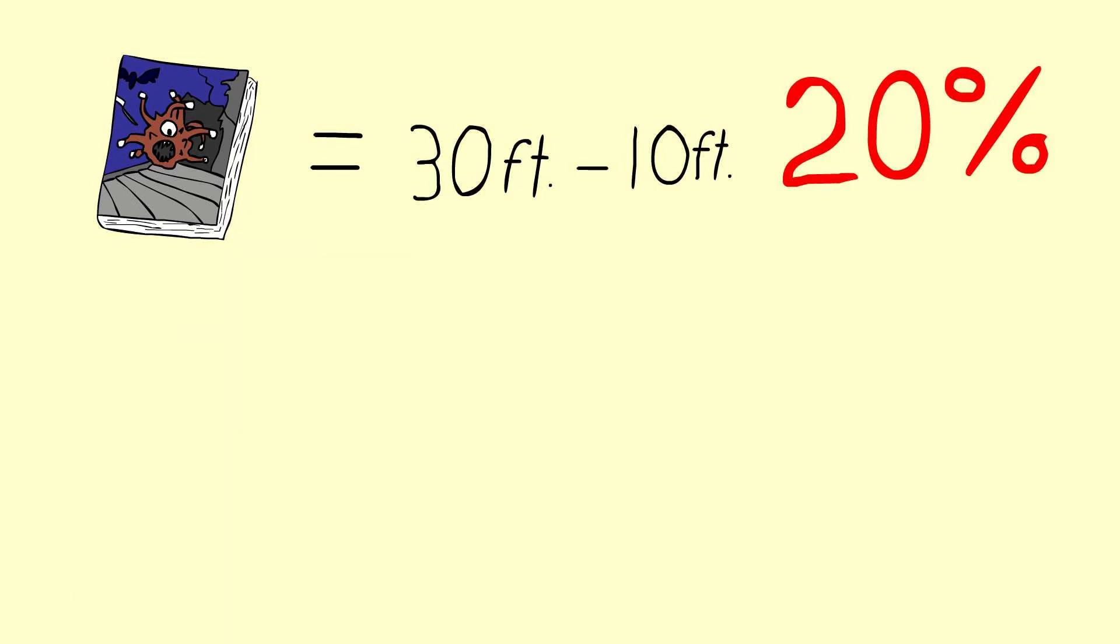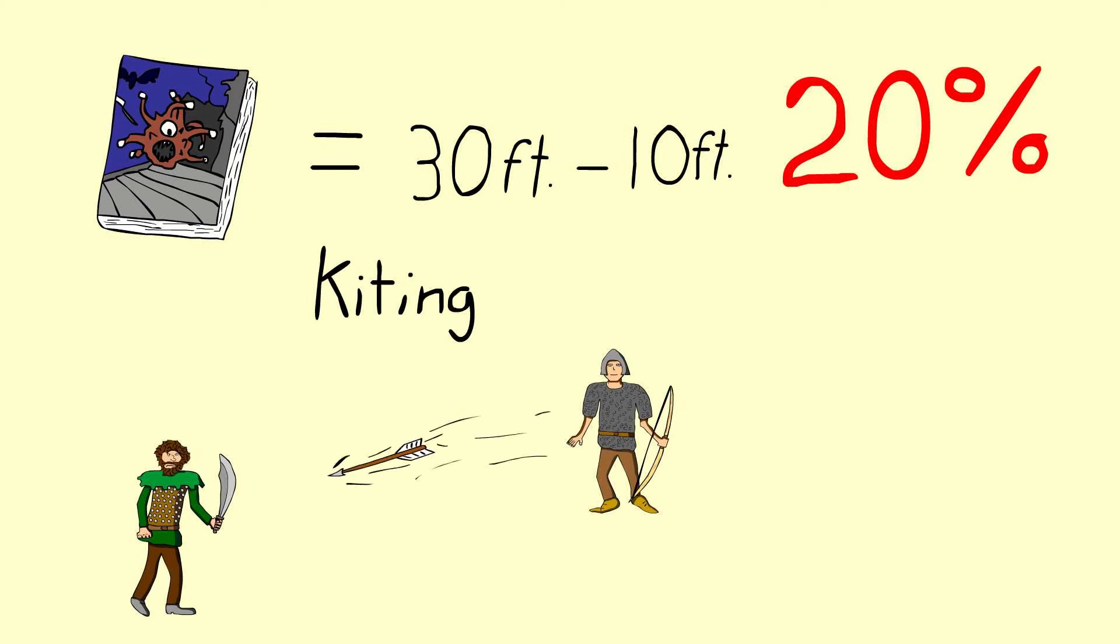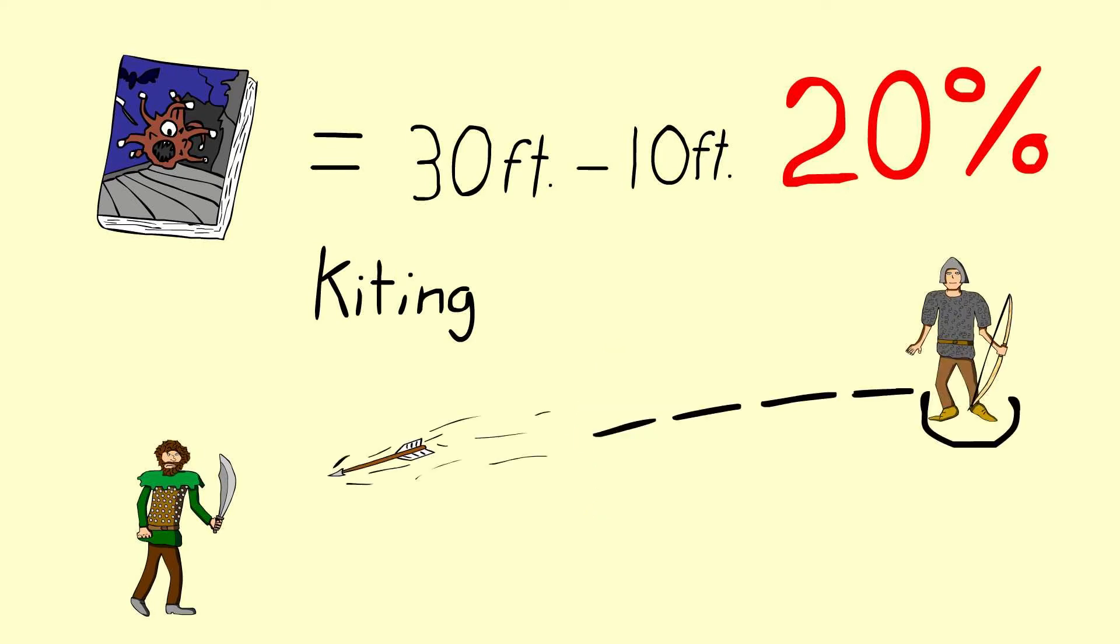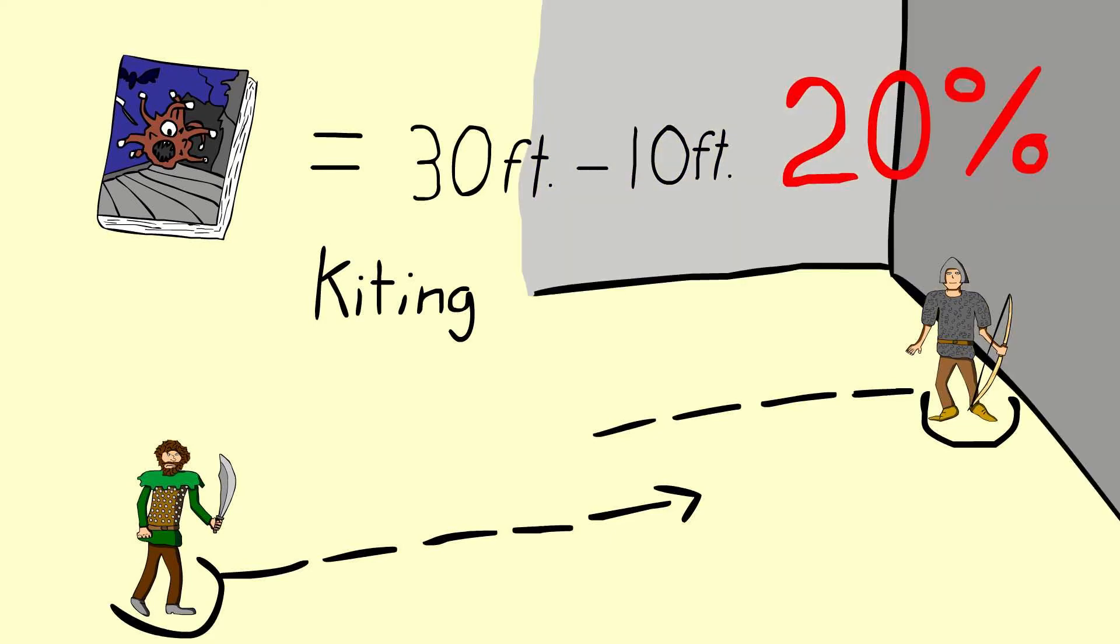At which point, the only tactic left for the creature is kiting, attacking within range before moving out of range forcing the characters to follow it. This is effective but annoying. However, if the battlefield is restrictive enough where movement is limited, then the tactic fails.